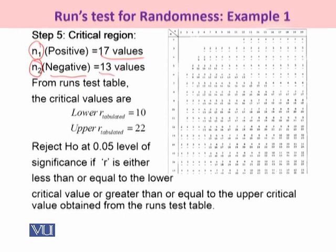So from the runs test table, the critical values would be taken as you just scan. N1 was 17. So looking into our table, where you would have your N1 as being 17 and your N2 is being taken as 13, you would be getting a pair of values as being 10 and 22. So your lower R tabulated value is 10, whereas the upper R tabulated value is 22.